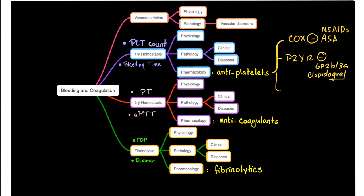The third group is GP2B3A antagonists or inhibitors, such as the famous abciximab, tirofibane, and eptifibatide. These are the drugs that inhibit primary hemostasis. To measure primary hemostasis, you measure platelet number using platelet count, and platelet function using bleeding time and other tests.